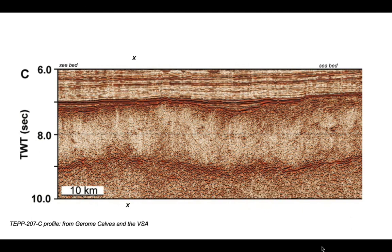Let's start off with the seabed. In common with seismic surveys acquired across deep water, this image has been cropped so that much of the water column is not displayed. It's cropped just above the seabed, which comes in at about six seconds two-way time. To work out what that means in terms of real bathymetry — in meters and kilometers — we need to understand the seismic velocity of seawater. We're going to use a velocity of 1.5 kilometers per second.